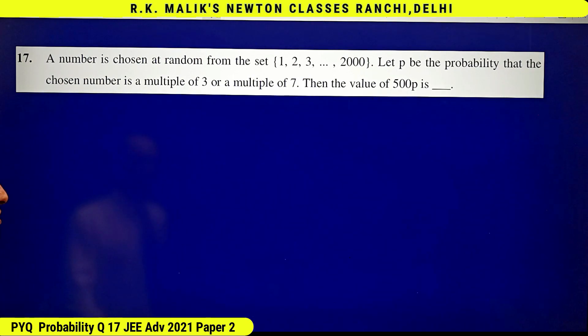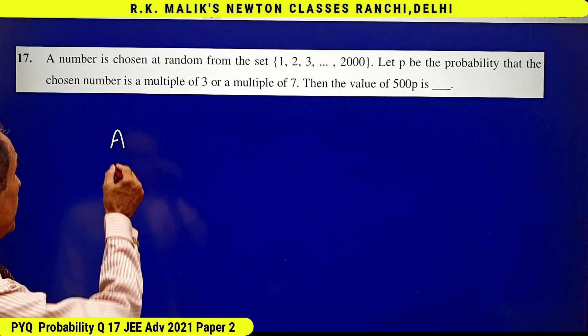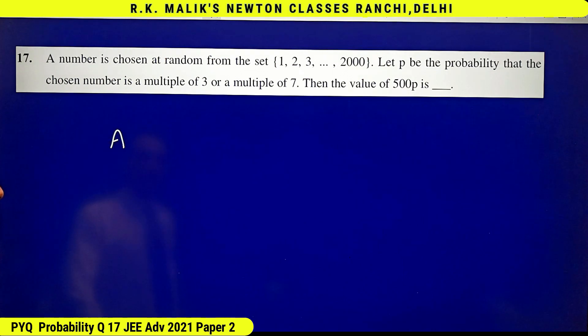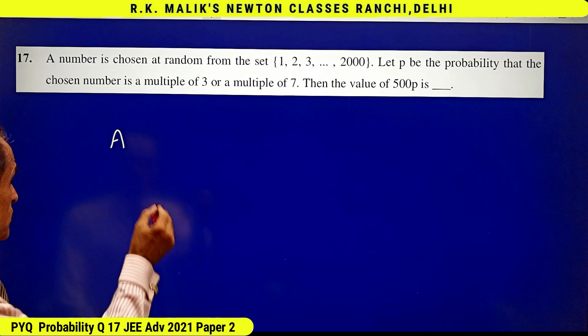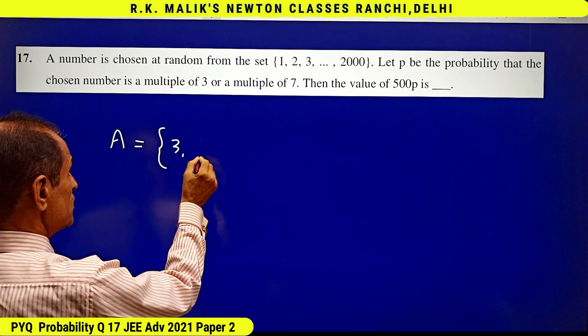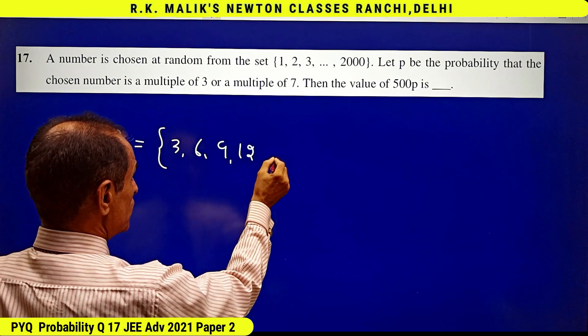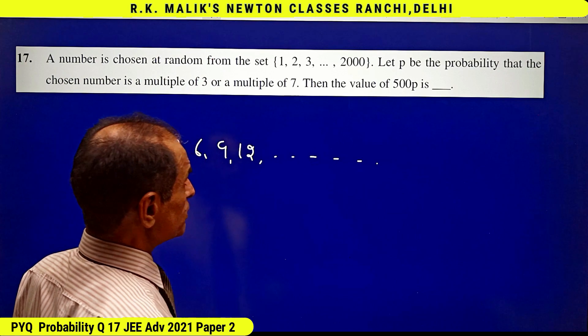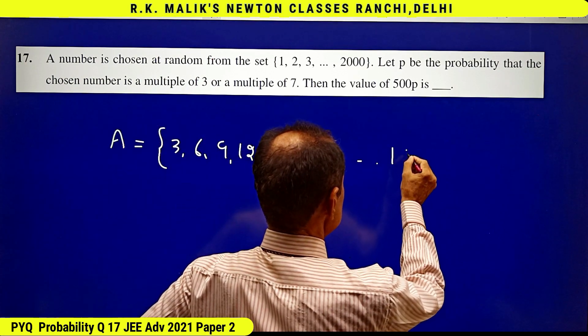It's just a bold level question. Let A denote the set of all those numbers which are multiples of 3. Then A will contain the elements 3, 6, 9, 12...